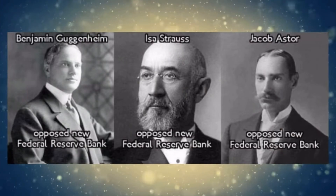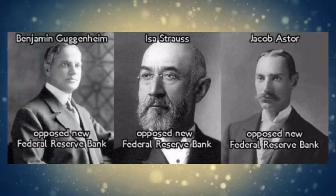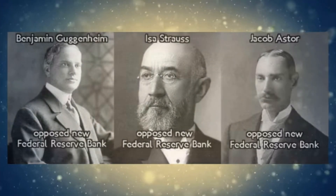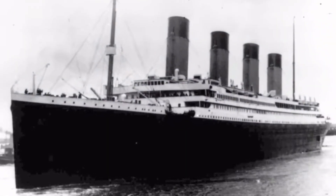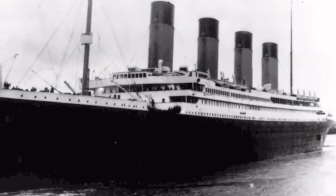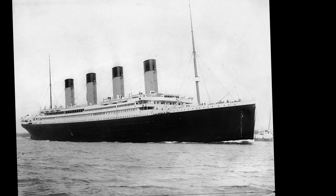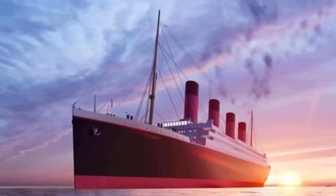Jacob Astor was the only one standing in the way of a central bank at the time. There were other wealthy men like Benjamin Guggenheim and the Isidor Strausses who also opposed the idea of a central bank and were on the Titanic as well. The morning the Titanic was supposed to set sail, JP Morgan, the Rothschilds, and others quietly exited the ship without any explanation.